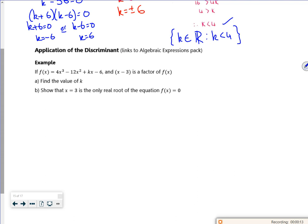So it says application of the discriminant, but it links to the algebraic expressions pack. It says if f(x) is 4x cubed minus 12x squared plus kx minus 6, and x minus 3 is a factor of f(x), find the value of k.